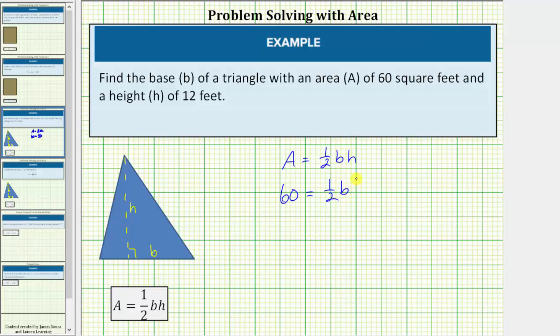Times H, the height, which is 12 feet. Now we'll simplify the right side. One-half times 12 is 6, so the equation is 60 equals 6B.